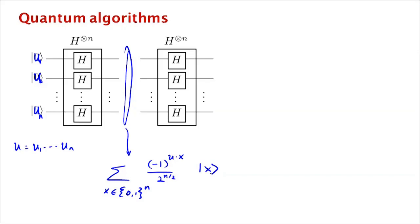Now, what happens when you do another Hadamard transform here? Well, what happens is that your new Hadamard transform transforms this into summation over y, beta y, y. And what's beta sub y? Okay, so let's compute beta sub y. Beta sub y is going to be sum over all x of the amplitude of x, which is minus 1 to the u dot x over 2 to the n over 2, times the amplitude of going from x to y when you do a Hadamard transform.